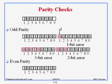A two-bit error will not be detected, because two flipped bits cancel each other out in the ones count. Three-bit errors may or may not be detected depending on what changed. You can only reliably count on detecting one-bit errors. There is no difference in power between odd parity and even parity — you can use either one.